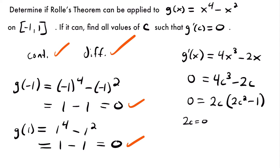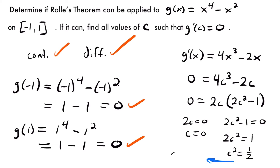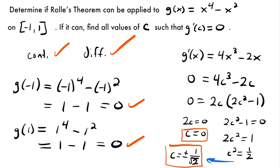Setting each factor equal to 0: from 2c = 0, we get c = 0. From 2c² - 1 = 0, we get 2c² = 1, then c² = 1/2, so c = ±√(1/2) = ±1/√2. So there are actually 3 values of c: c = 0, c = 1/√2, and c = -1/√2 — all points on the given interval where the slope is 0.